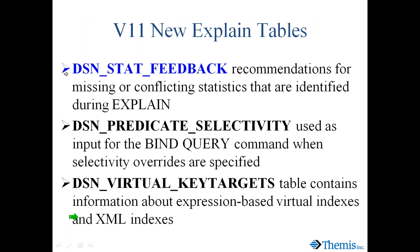The three new explain tables in version 11 are: stats feedback, which gives recommendations for missing or conflicting statistics — both problems for the access path optimizer; predicate selectivity, used as input for bind query when you want selectivity overrides for certain table columns; and extended virtual index key targets, which gives information about your expression-based and XML virtual indexes.